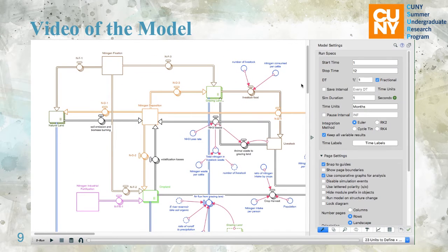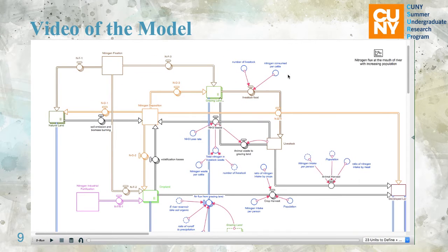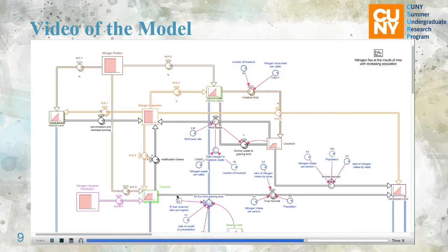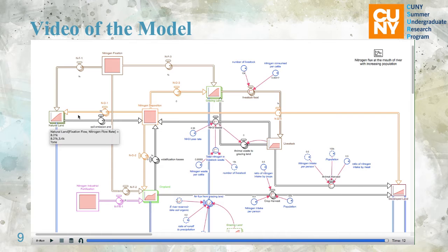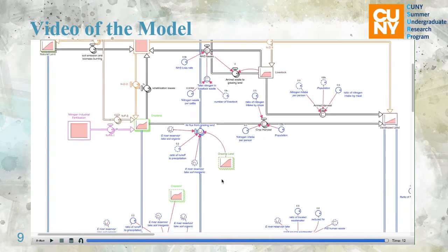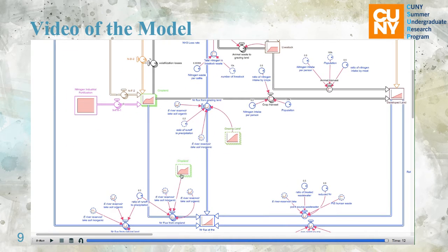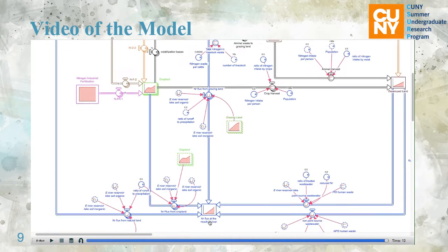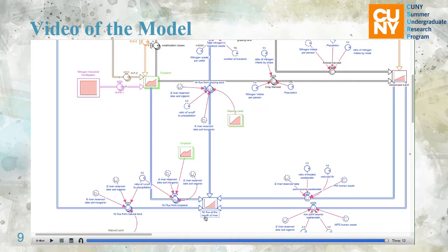This model is run for 12 months. Now we will see what happens. We can see the nitrogen inside the land is increasing, and it's going to increase the nitrogen flux at the mouth of the river.